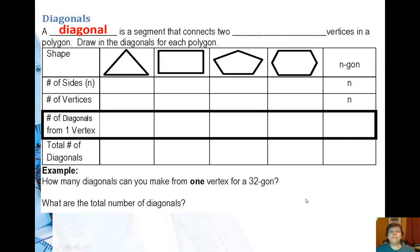A diagonal is a segment that connects two non-adjacent vertices in a polygon. So we're going to go ahead and draw the diagonals for each of the polygons in this table.